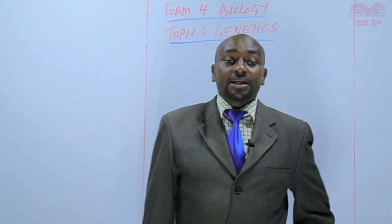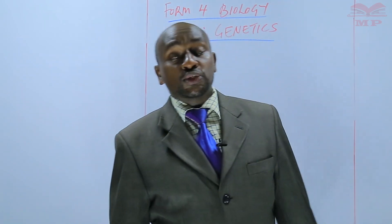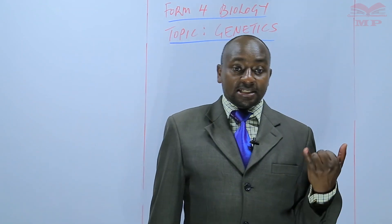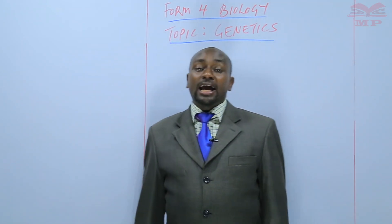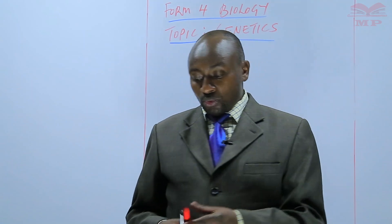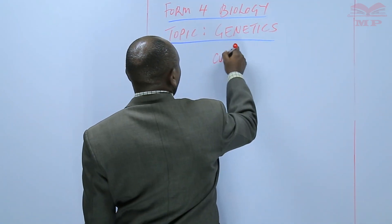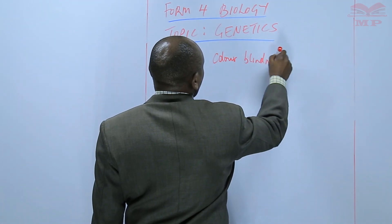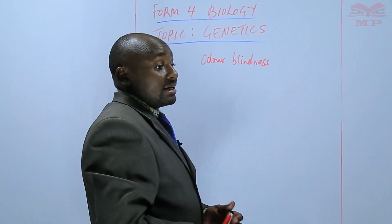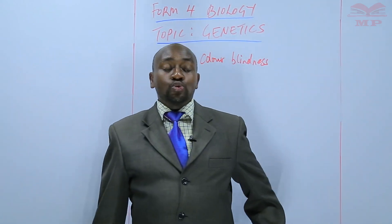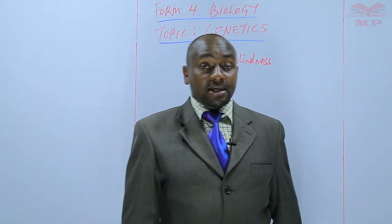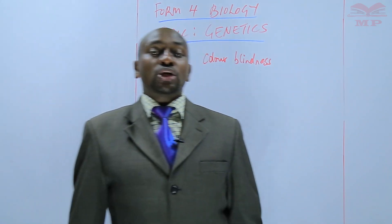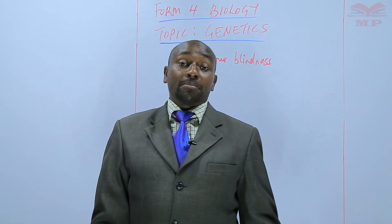During the previous lesson, we mentioned two genetic disorders that are located on the X chromosome: color blindness and hemophilia. The most common type of color blindness is referred to as red-green color blindness, and this is the inability to distinguish between red and green color by some people.